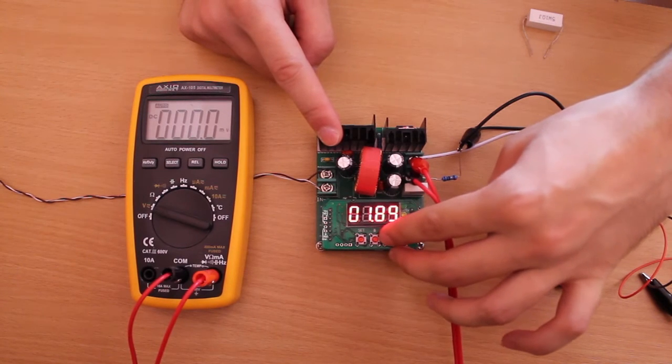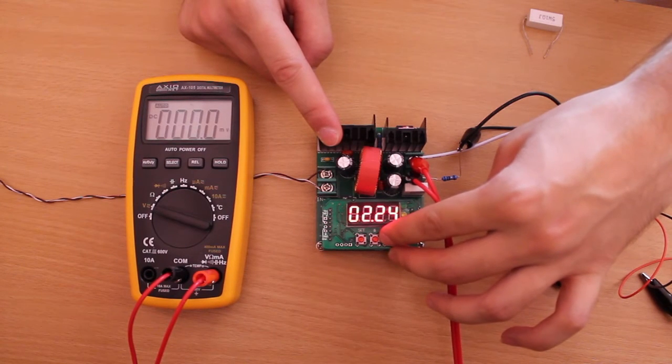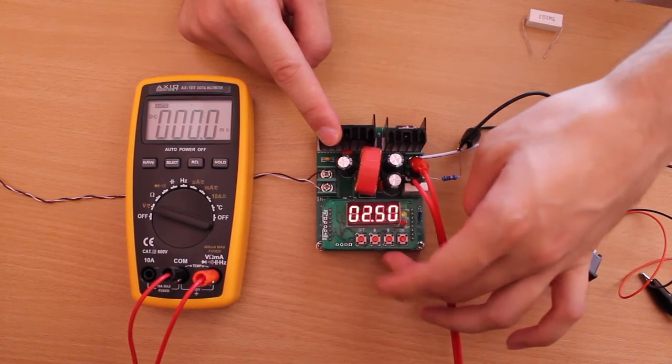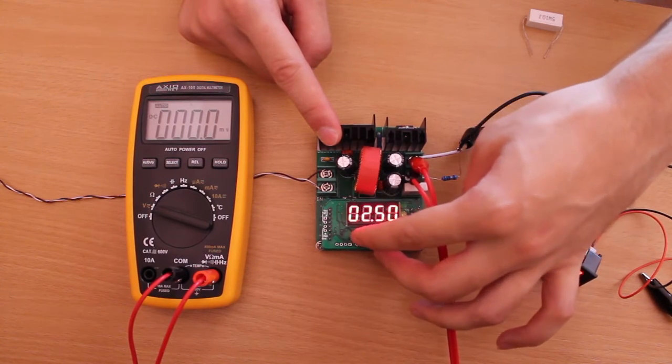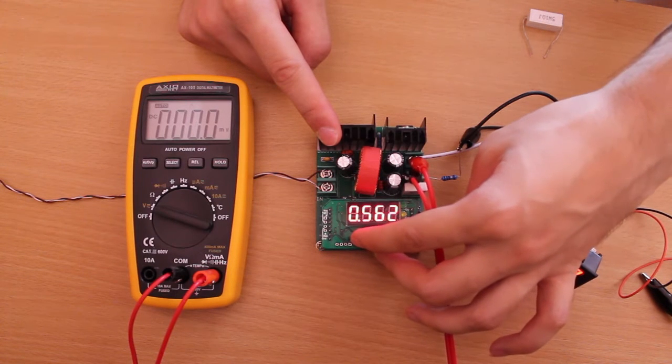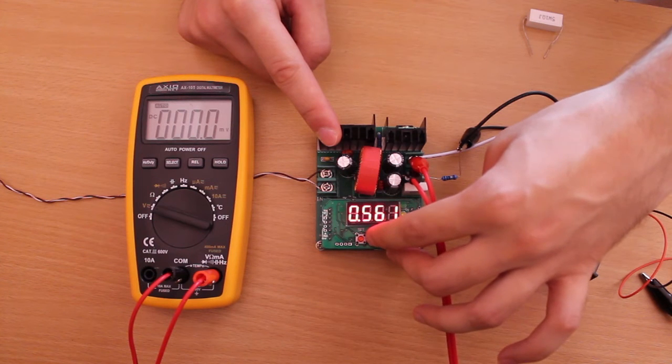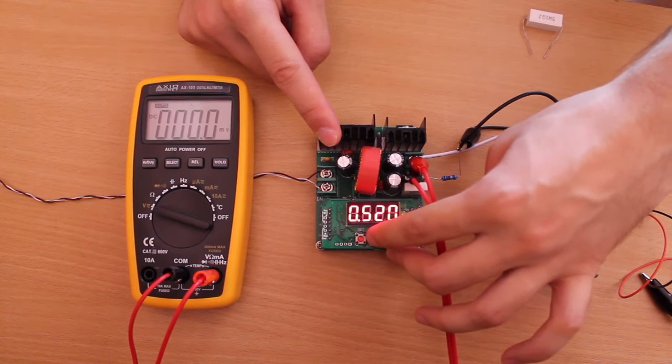We set the voltage level at 2.5V. We press SET. Press SET again to switch between displaying voltage and current. Now we're in the current. We go down to 500mA.